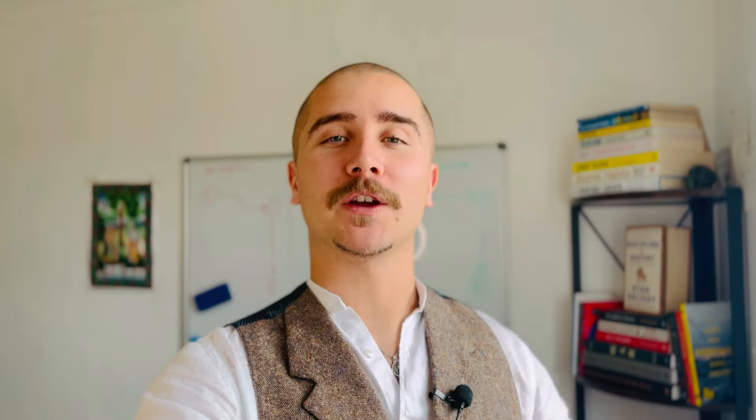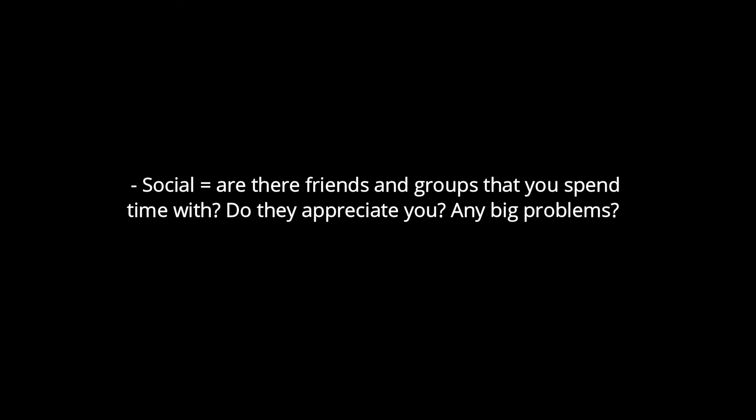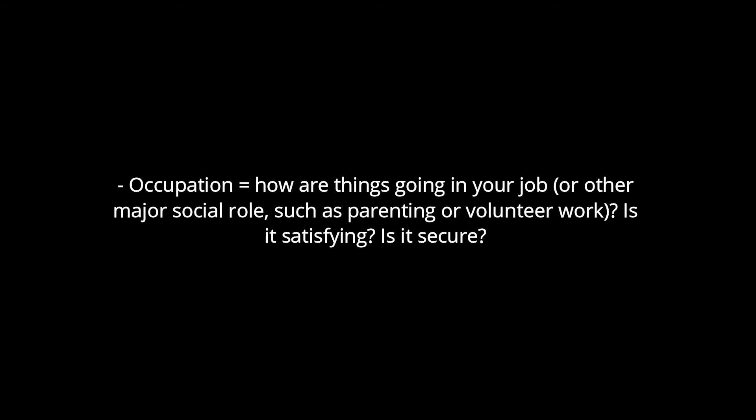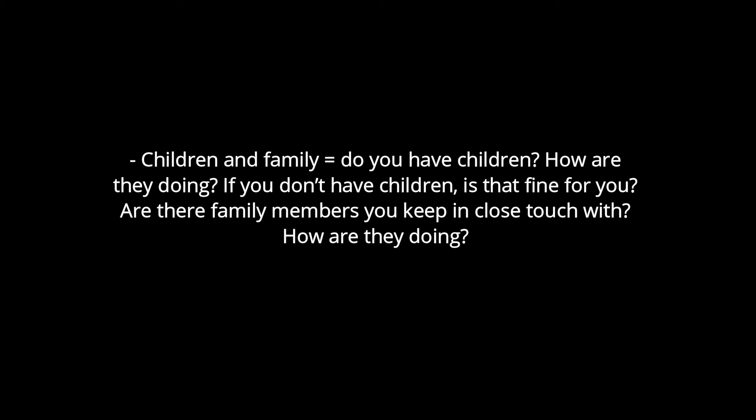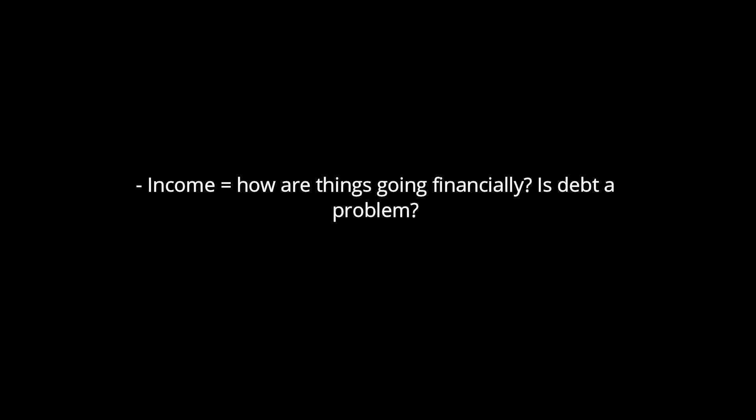As a bonus, here are some key questions you can ask in order to understand your own or another person's resource allocation. For social: are there friends and groups that you spend time with? Do they appreciate you? Any big problems? Occupation: how are things going in your job or other major social roles such as parenting or volunteer work? Is it satisfying? Is it secure? Children and family: do you have children? How are they doing? If you don't have children, is that fine for you? Are there family members you keep in close touch with? Income: how are things going financially? Is debt a problem? Abilities and appearance: do you have any major health problems or concerns about your appearance or abilities? Love and sex: how are things going in your main relationship?